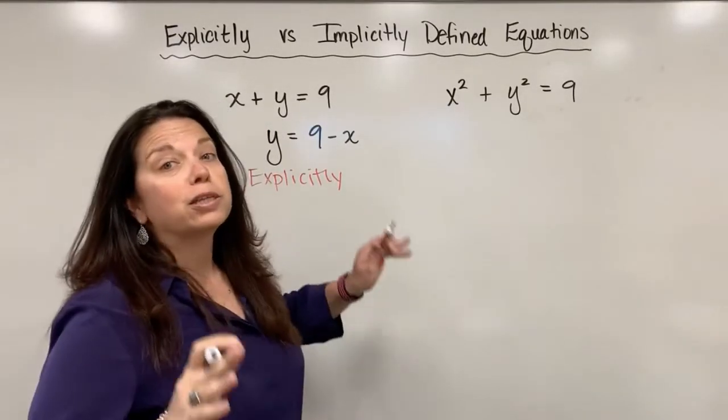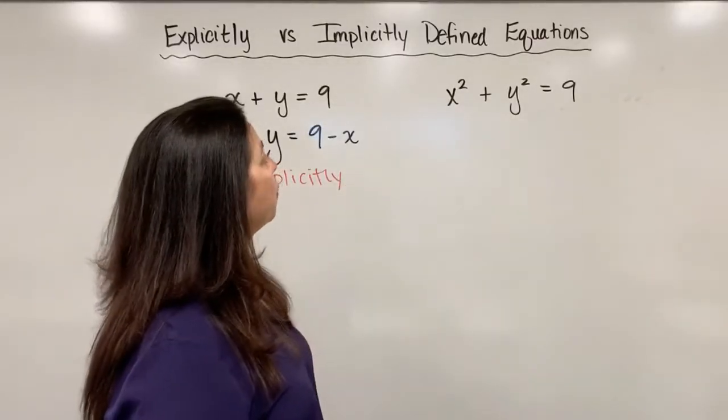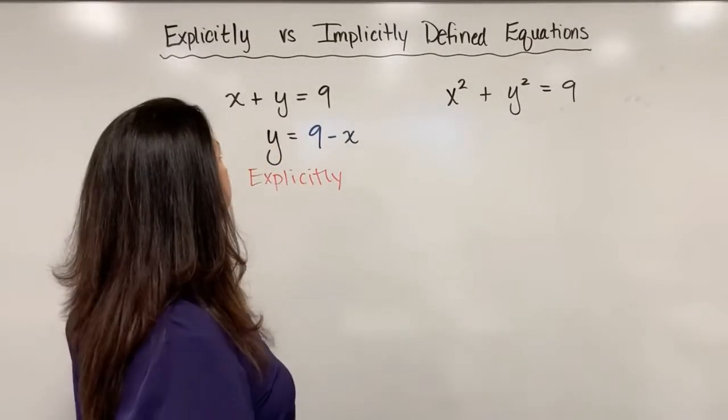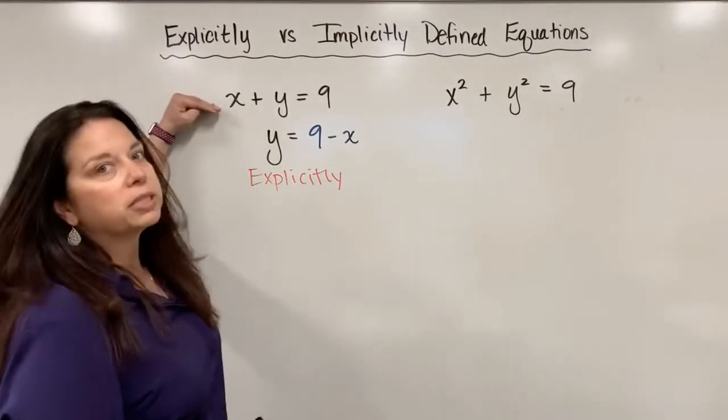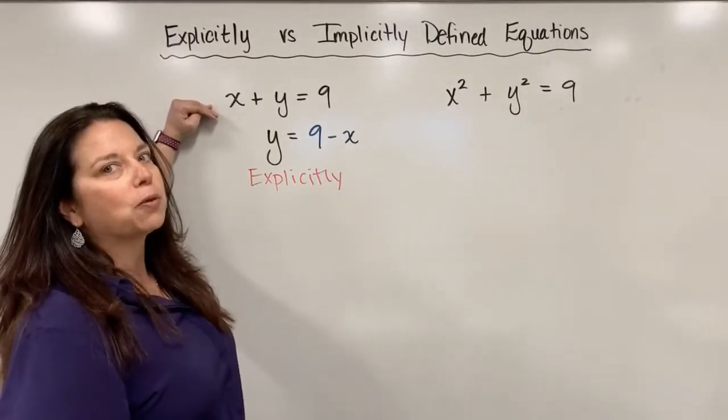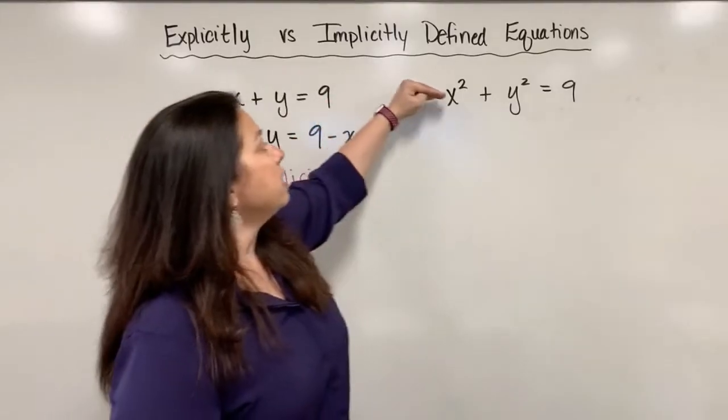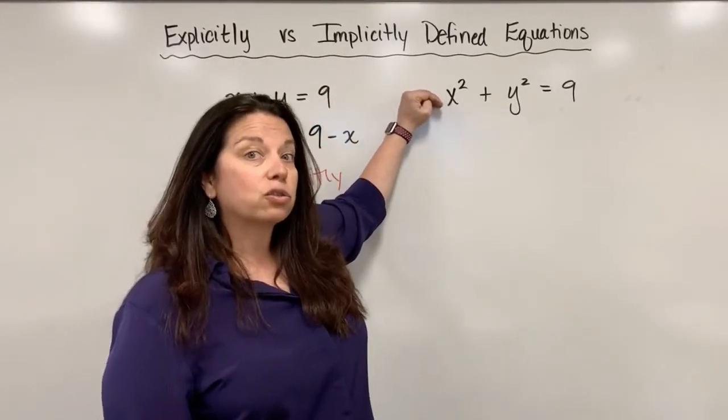Well, turns out this is a completely different equation. Its graph would be totally different. Whereas this first explicitly defined function turns out to be graphed as a line, this particular equation turns out to be graphed as a circle.